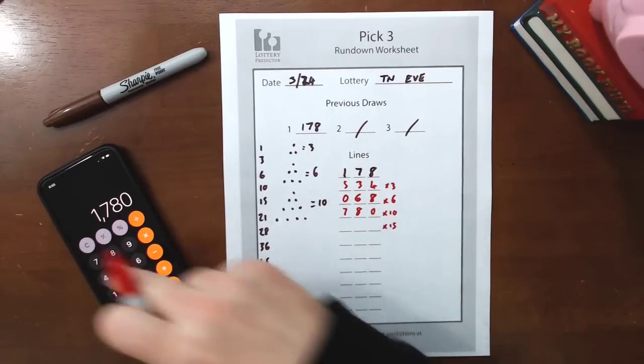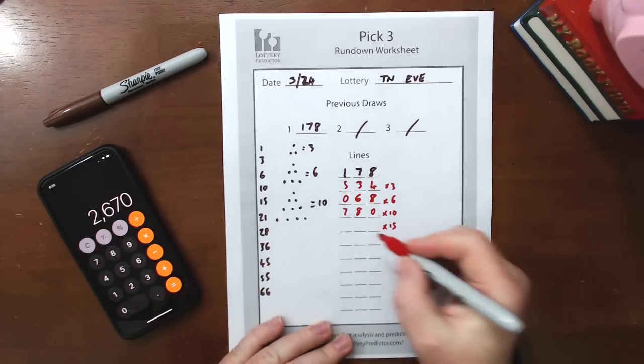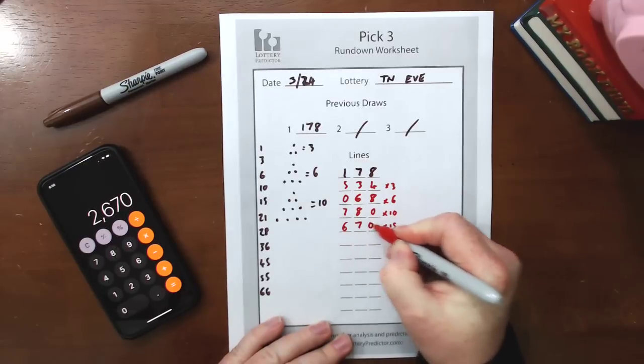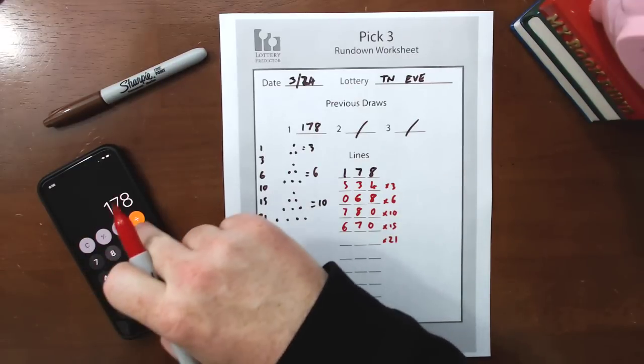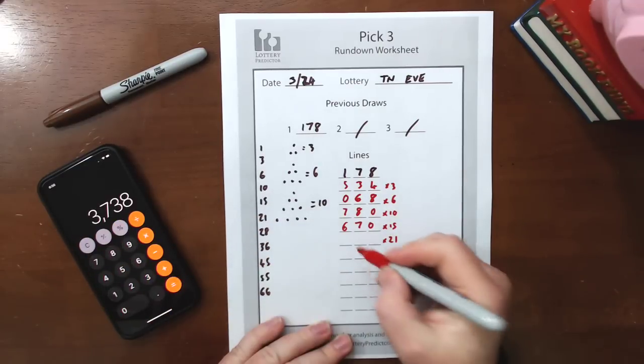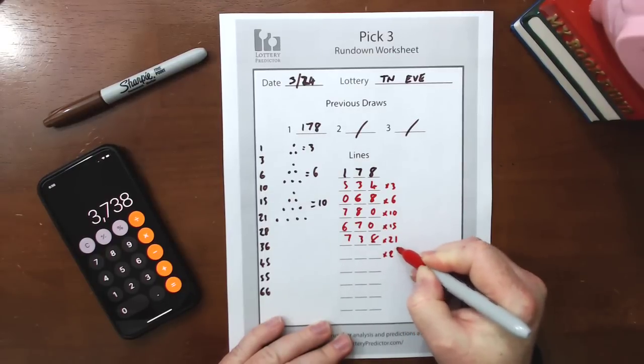Next one we're going to multiply by 15. 178 multiply by 15, so it's 670. Next one down is 21. 178 multiply by 21, 738. Next is 28.